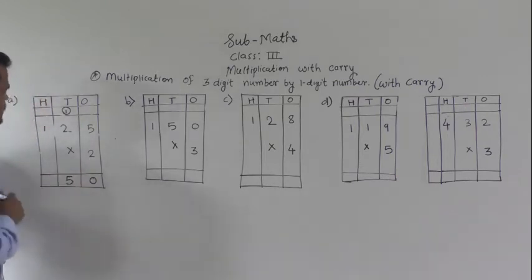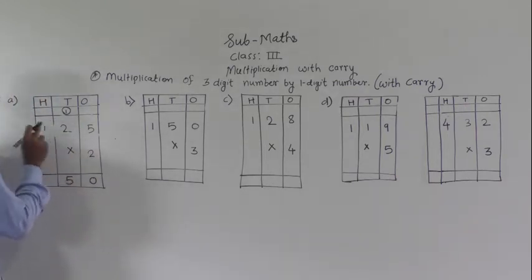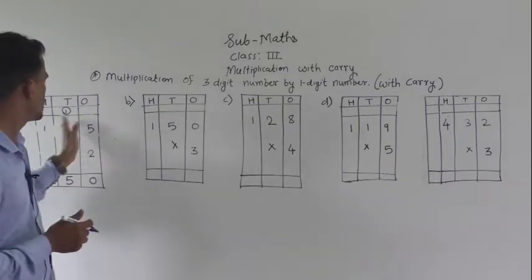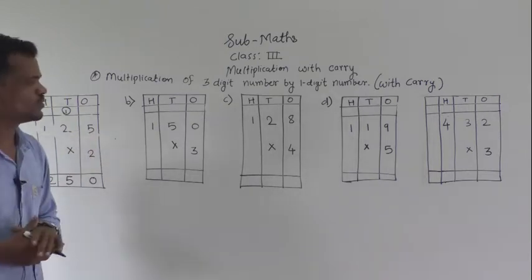Then, multiply this hundreds digit by 2. 2 times 1 is 2. So, 250 is the product of 125 and 2.